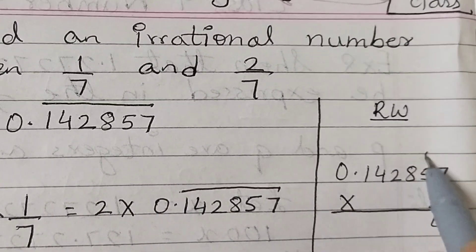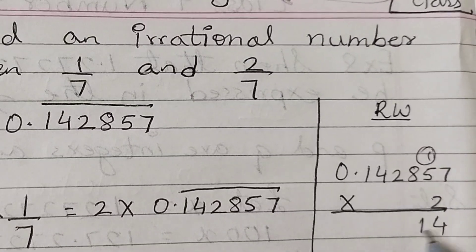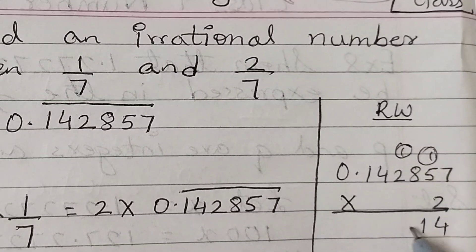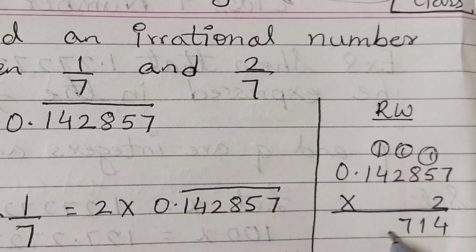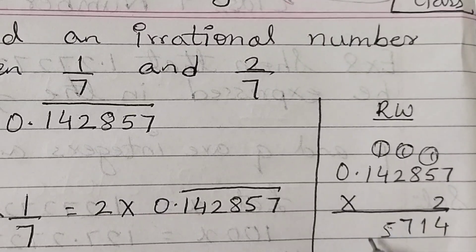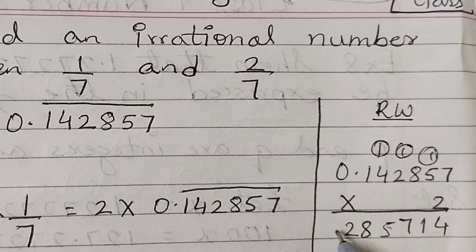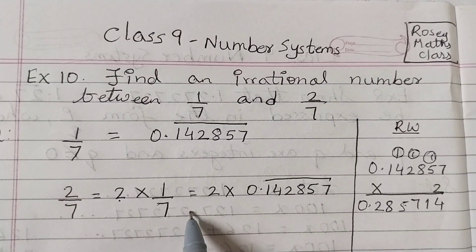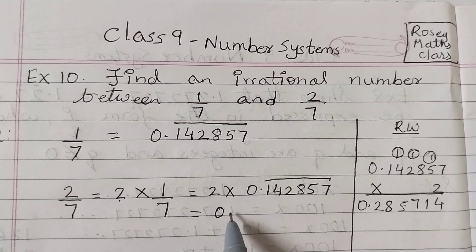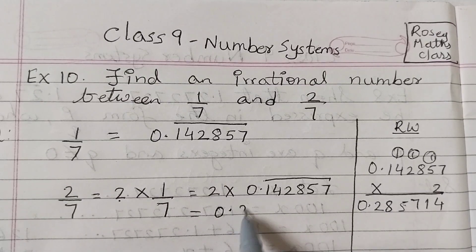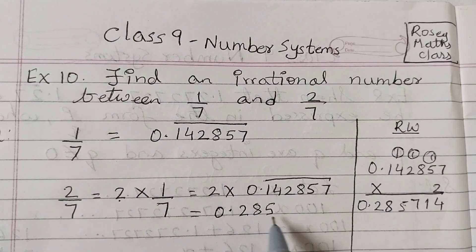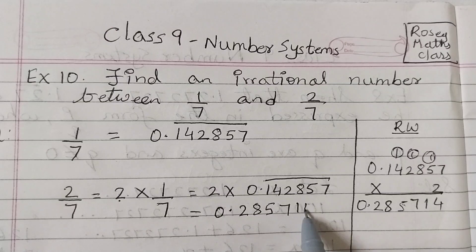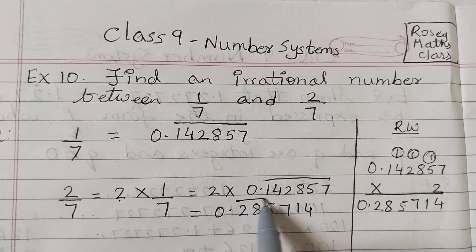the 8, 2, 1, 0 point 0. So this number is equal to 0.285714 and the bar is on all the six digits after the decimal point.